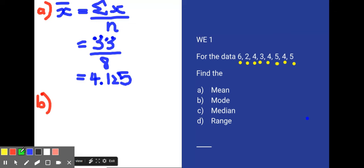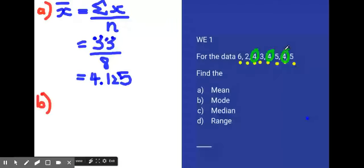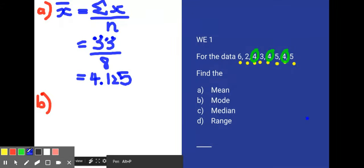Looking at my results, I can see there's three 4s and two 5s, so the mode equals 4.